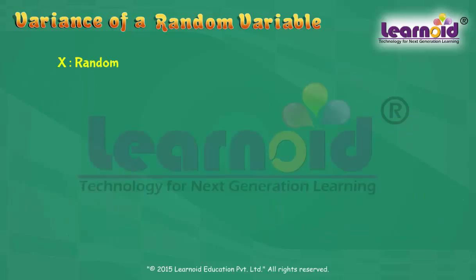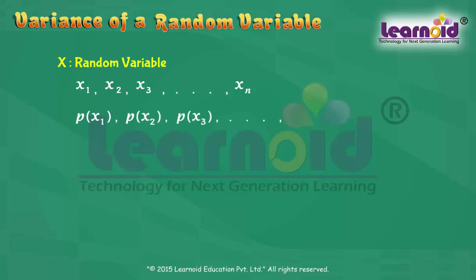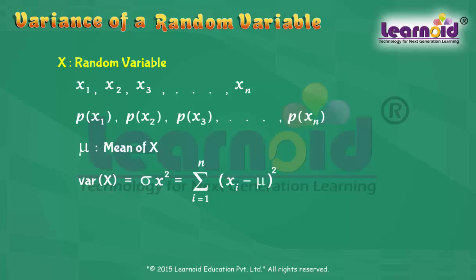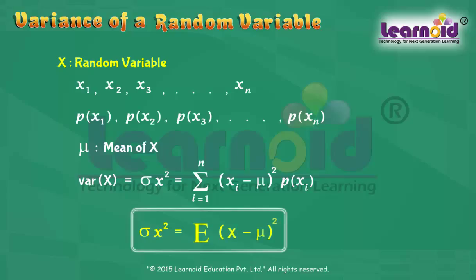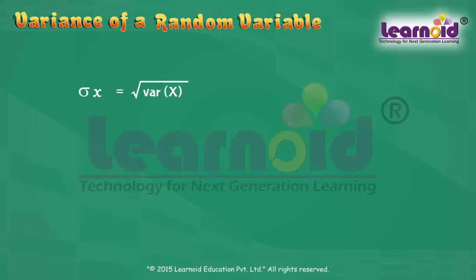Let X be a random variable whose possible values X1, X2, and so on up to Xn occur with probabilities P(X1), P(X2), P(X3), and so on up to P(Xn). Let mu be the mean of X. Then the variance of X, denoted by sigma-X-squared, is the summation of (Xi minus mu) squared times P(Xi), or the mean of (X minus mu) squared. The square root of variance is known as the standard deviation of random variable X.